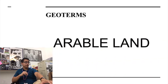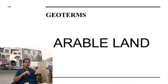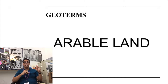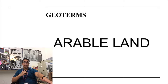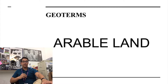So here we go. The first term would be arable land. Make sure you understand that arable land is the percentage of farmland that there is in a country. In a country like Japan, there's not a lot of farmland or arable land, so make sure you understand that.